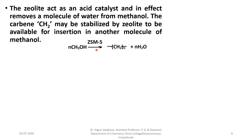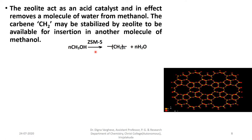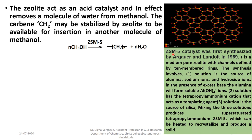ZSM-5 is an acid catalyst. ZSM-5 catalyst was first synthesized by Argauer and Landolt in 1969. It is a medium pore-size zeolite with channels defined by 10-membered rings. Its synthesis involves three solutions: one is the source of alumina, sodium ions, and hydroxide ions; in the presence of excess base, the alumina forms soluble Al(OH)₄⁻ ions. The second solution contains the tetrapropylammonium cation that acts as a templating agent. The third solution is the source of silica. Mixing the three produces a supersaturated tetrapropylammonium ZSM-5, which is heated to recrystallize into solid ZSM-5.